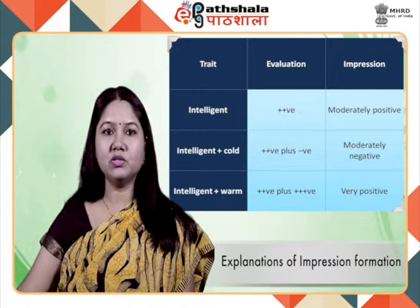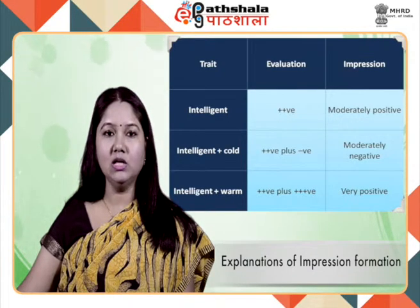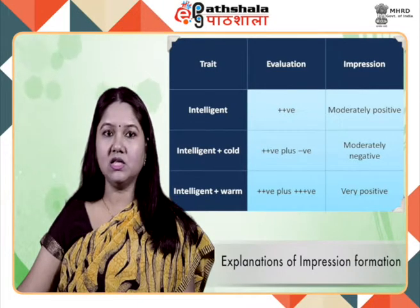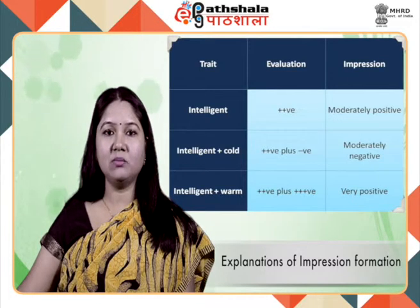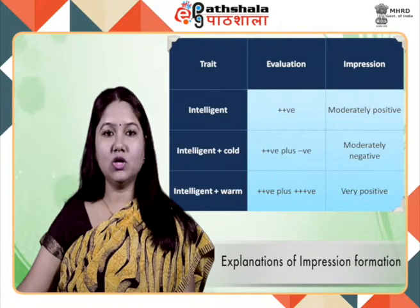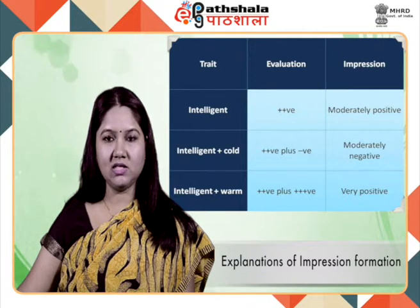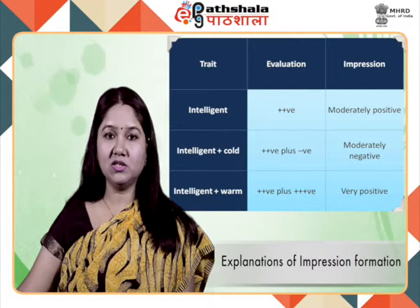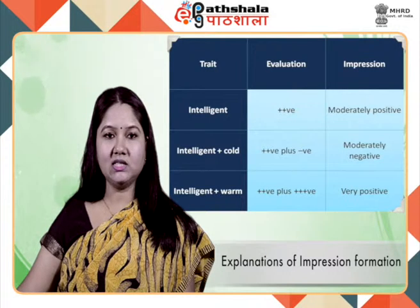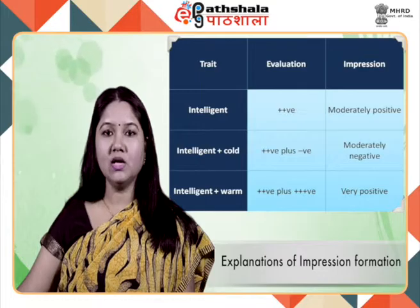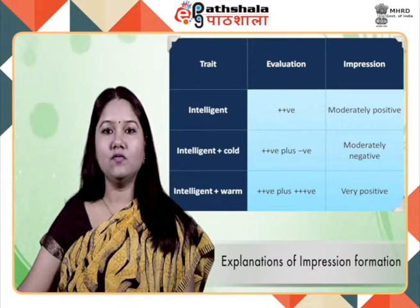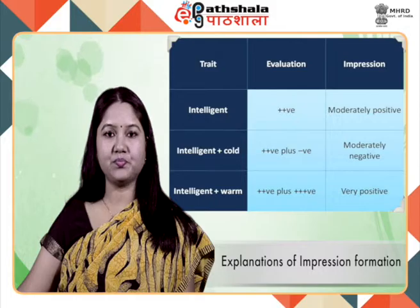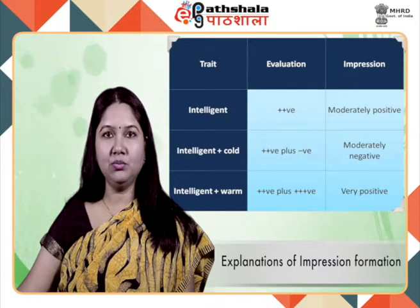Kunda and Thagard proposed a parallel constraint satisfaction model in which various stereotypes, traits, and behaviors act as interconnected nodes in a spreading activation network. The spread of activation between nodes is constrained by positive and negative associations, and nodes not only activate but also deactivate each other. The theory assumes that directly observed information constrains the impression formed, and impressions are formed holistically through the simultaneous activation and deactivation of associates of the observed information, jointly constraining the impression of the target person.